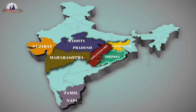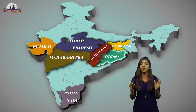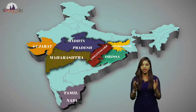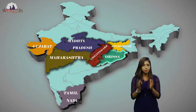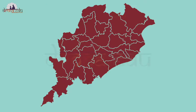Odisha has the largest reserves and is the biggest producer of bauxite ore in India. Its bauxite deposits are mainly found in Kalahandi, Koraput, Sundargarh and Sambalpur districts.